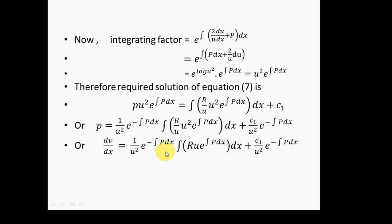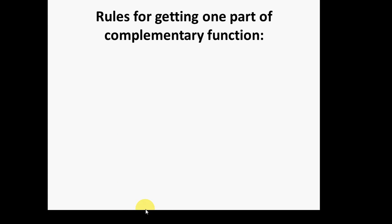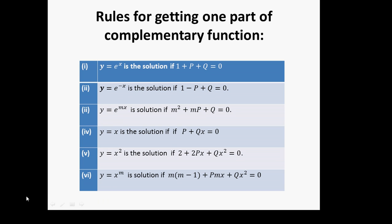This is the method by which we can solve the linear differential equation with variable coefficients when one part of the complementary function is known. We have some rules in a table for finding u: if 1 + P + Q = 0, then u = eˣ is a part of the CF; if 1 − P + Q = 0, then u = e^(−x); if P + Qx = 0, then u = x is a part of the CF; and so on.